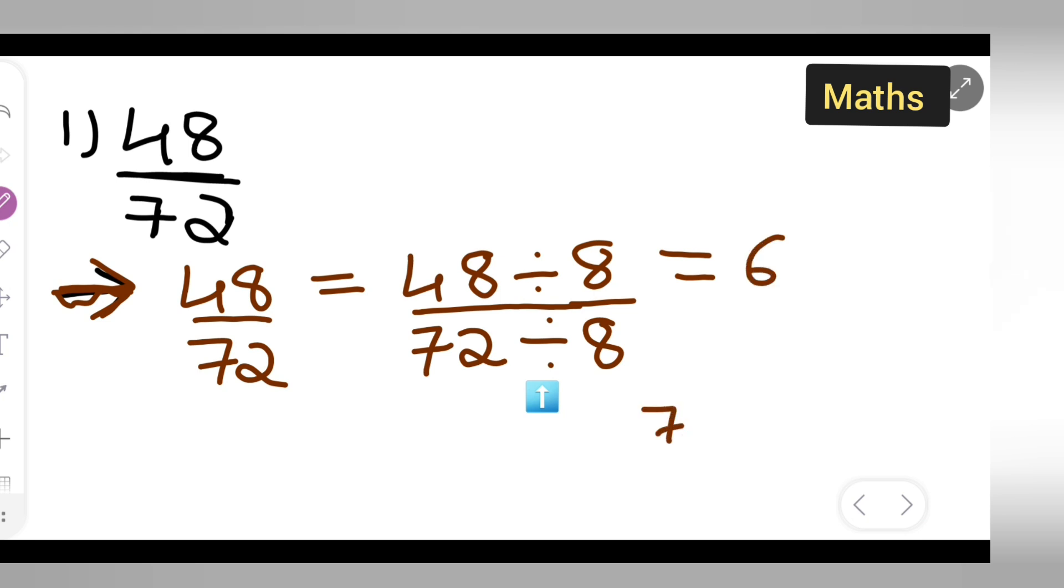Next is 72 divided by 8. So, 8 ones are 8, 8, 9's are 72. So, your answer is 72. So, your answer is upon 9.